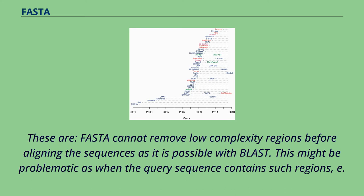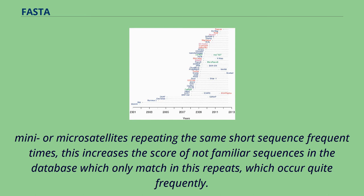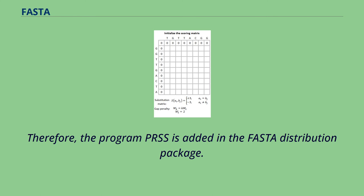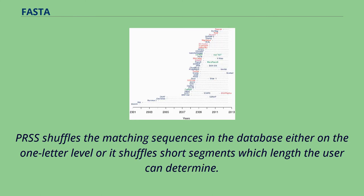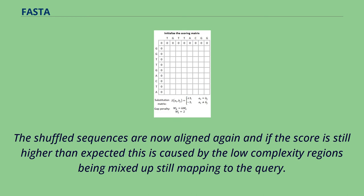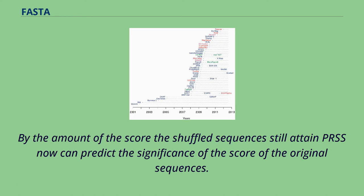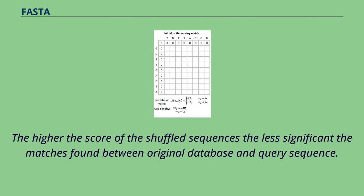FASTA cannot remove low-complexity regions before aligning the sequences as it is possible with BLAST. This might be problematic when the query sequence contains such regions, e.g., mini or microsatellites repeating the same short sequence many times. This increases the score of unrelated sequences in the database which only match these repeats. Therefore, the program PRSS is included in the FASTA distribution package. PRSS shuffles the matching sequences in the database either on the one-letter level or by shuffling short segments of user-determined length. The shuffled sequences are then aligned again, and if the score is still higher than expected, this is caused by the low-complexity regions still mapping to the query. By the amount of the score the shuffled sequences still attain, PRSS can predict the significance of the score of the original sequences. The higher the score of the shuffled sequences, the less significant the matches found between the original database and query sequence.